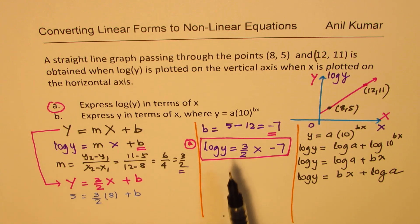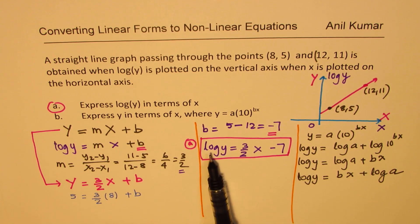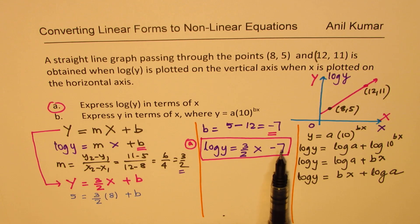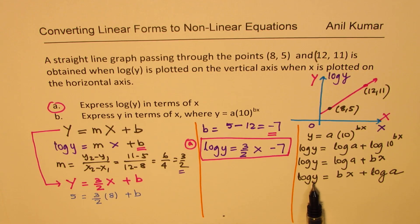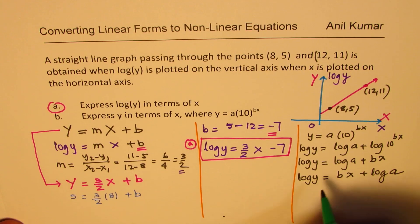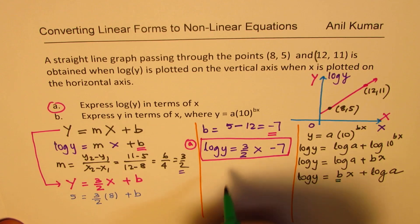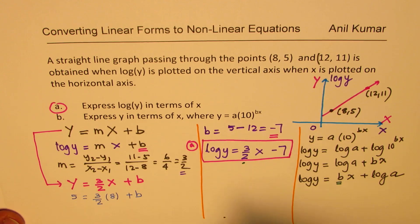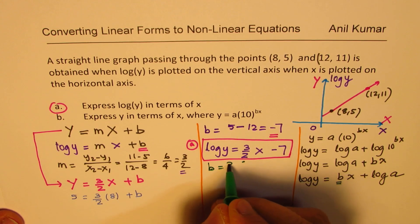Now if you compare the two equations, log of y is 3/2 of x minus 7. Here we have log of y equals bx plus log of a. So comparing this, we can find the value of a and b. Does it make sense to you? So what is b equal to? b is 3/2. So we can clearly see by comparison that b is 3/2.